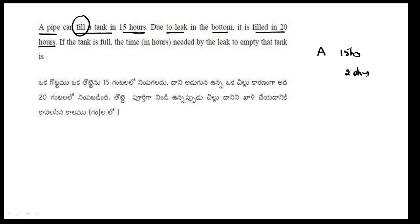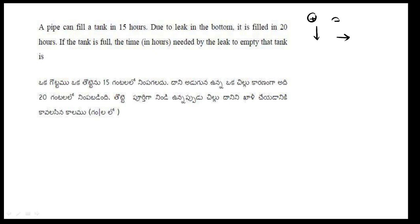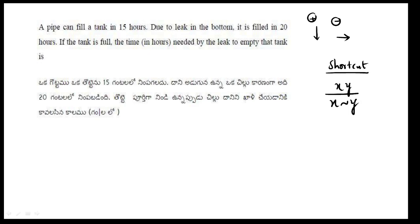If there is a leak, the pipe fills the tank slower — it can be a positive or negative effect. Using a direct formula shortcut, the total time taken is calculated by: xy divided by (x minus y).